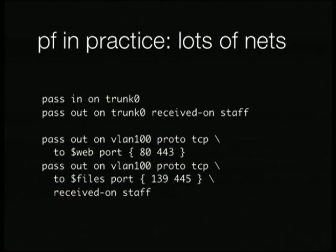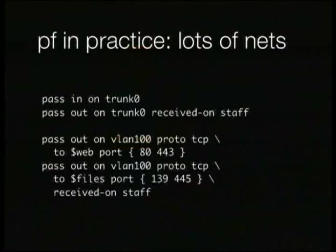Our external link is on trunk0 — we allow that to come into the box. We only want to allow traffic to go out from the staff network, so instead of specifying each interface separately we use the interface group. We have a DMZ with a web server and a file server. We want everyone to be able to connect to the web server, so we allow any connection that's entered the box to go out on VLAN 100 to the web server on ports 80 and 443. The curly brace notation in pf.conf is syntactic sugar for automatic list expansion — it expands to two rules, one for port 80 and one for port 443. The last rule allows packets received on the staff interfaces to connect to the file server.